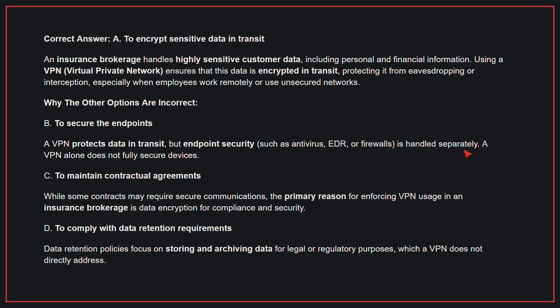Why the other options are incorrect? B, to secure the endpoints: A VPN protects data in transit, but endpoint security is handled separately — a VPN alone does not fully secure devices. C, to maintain contractual agreements: While some contracts may require secure communications, the primary reason for enforcing VPN usage in an insurance brokerage is data encryption for compliance and security. D, to comply with data retention requirements: Data retention policies focus on storing and archiving data for legal and regulatory purposes, which a VPN does not directly address. Therefore, the correct answer is A, to encrypt sensitive data in transit.